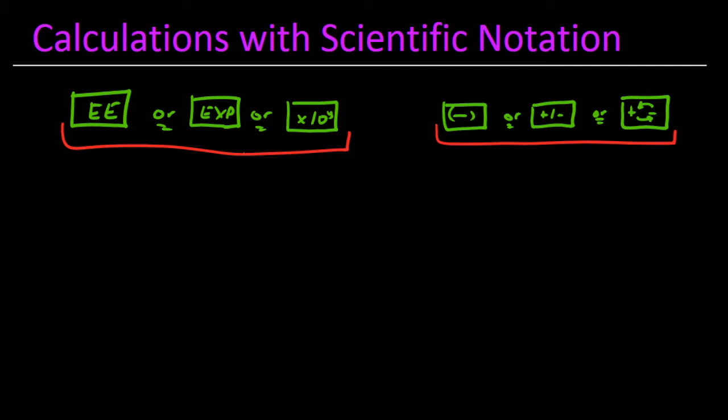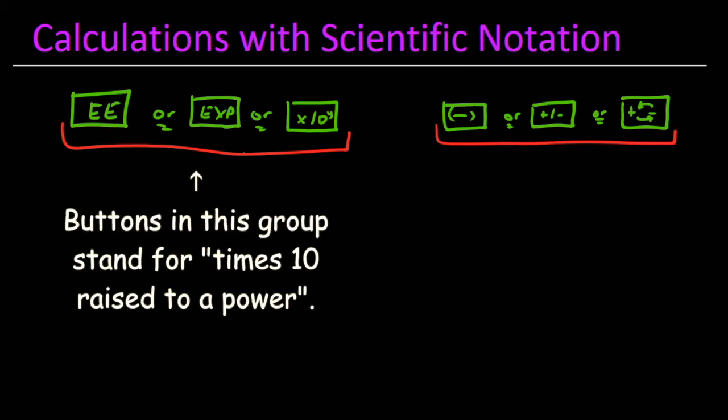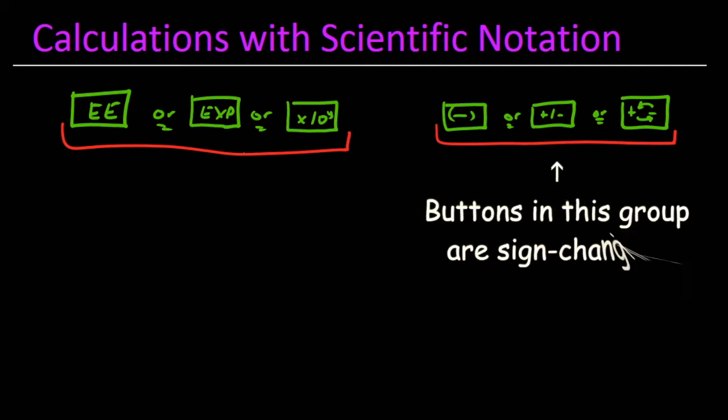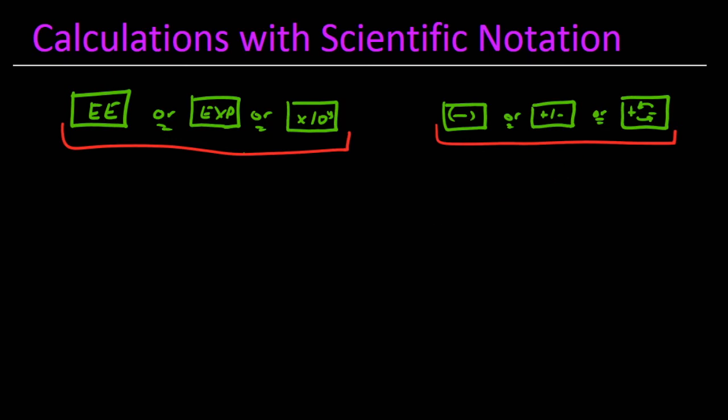If you are unable to find at least one button in each group, please post to the discussion board in your class and either your professor or one of your classmates will help you. The EE button and the other buttons in the first group stand for times 10 raised to a power. They are designed specifically for scientific notation. The buttons in the second group are sign changing buttons. They can designate whether a value is represented as positive or negative.